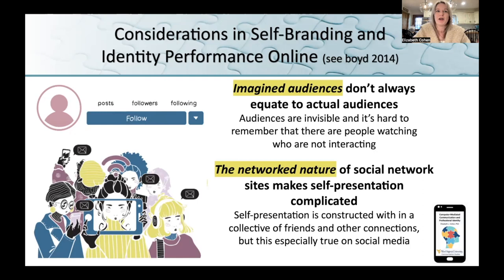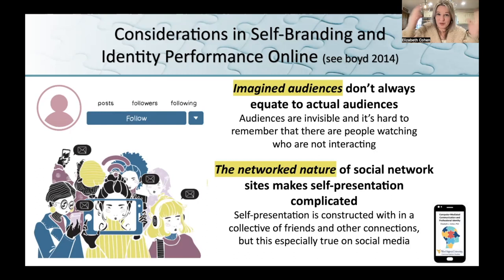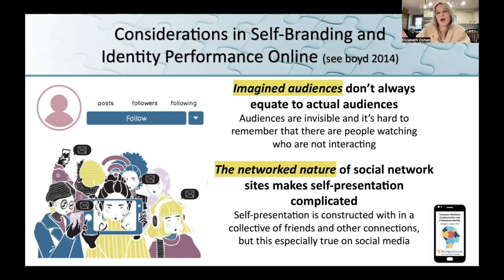One of the points she brings up is that everybody has an imagined audience. Whenever you post something on social media, you have some sort of audience in your head. But the audiences you're thinking about when making messages aren't necessarily your actual audiences. A lot of times, you might want to brag about an award and think grandma's going to be so proud — they might be part of your actual audience. But the people we don't see could still be there. We tend to base our imagined audiences on the people we see, not the people we don't.